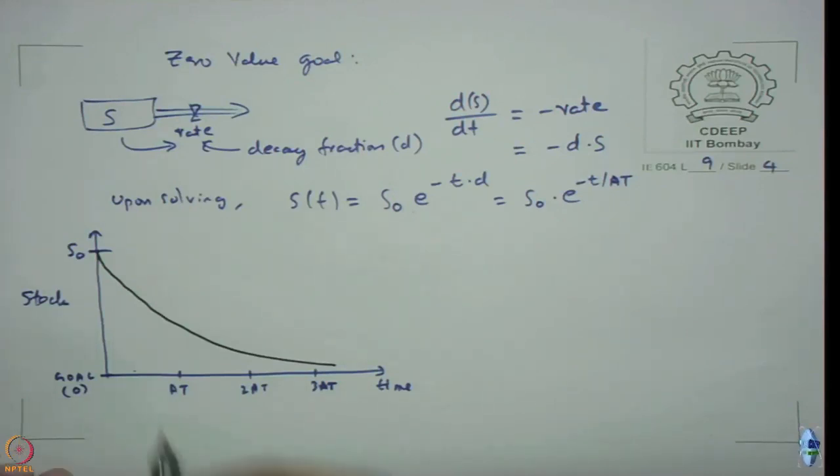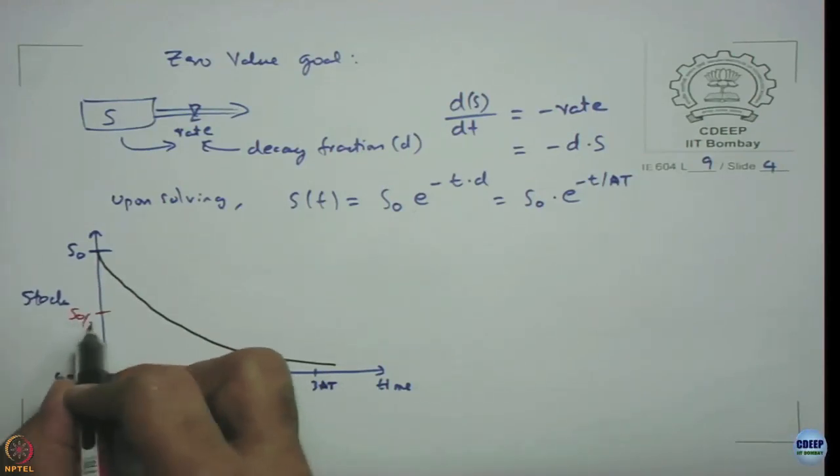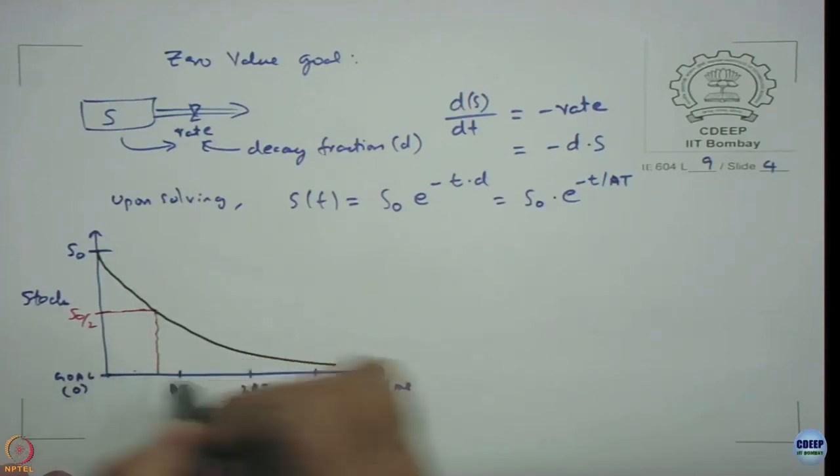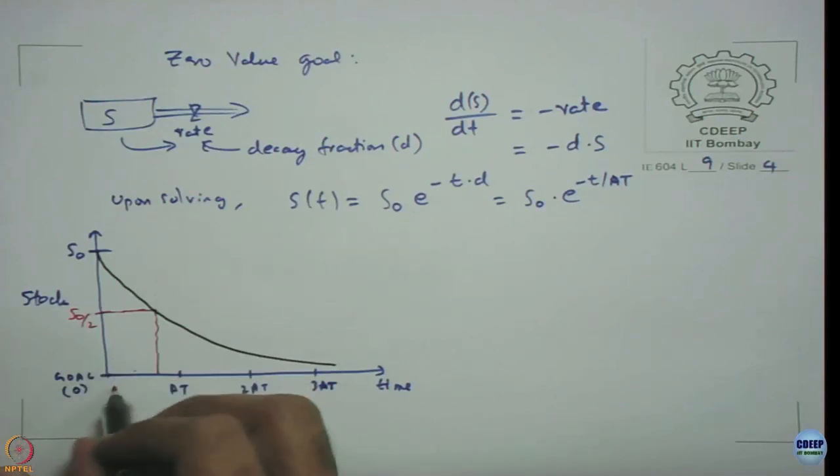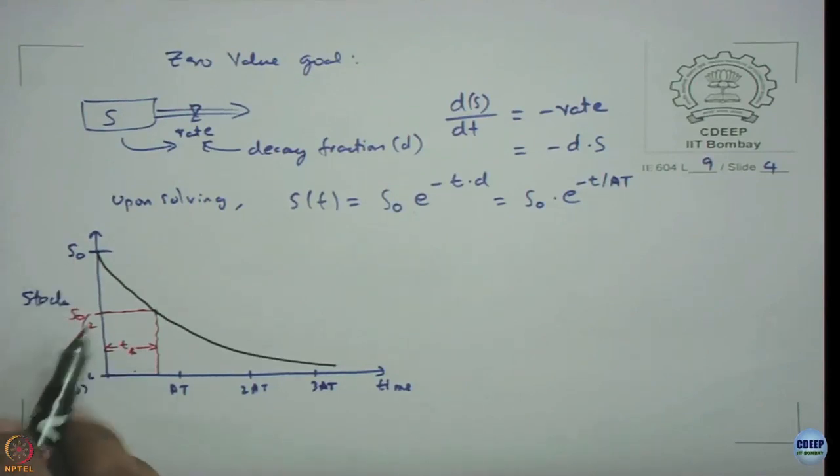One thing we are interested in is we want to know when is the half life. We want to know at what half point I will reach this. Let us denote this as the half life, t subscript h, the time at which the stock value becomes 50 percent.